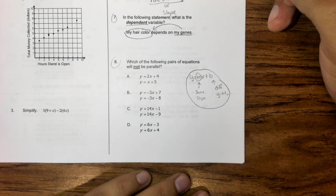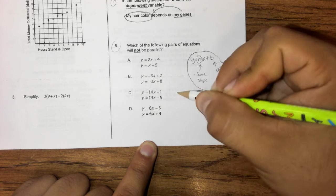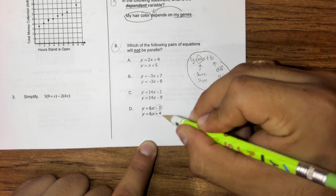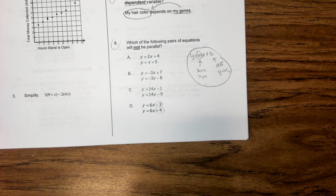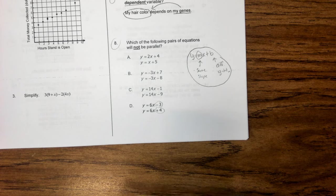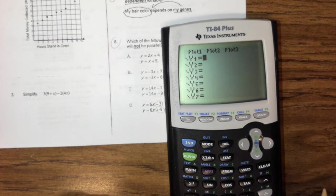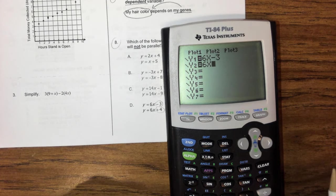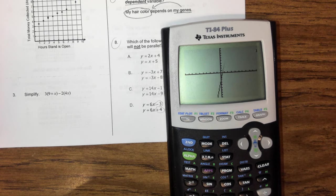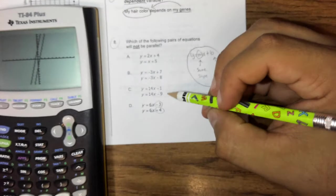So it says which of the following will not be parallel. I'm going to start from the bottom. So we have 6x and 6x. So my steepness is 6. One of them starts at negative 3. One of them starts at positive 4. I guess I can really quickly go ahead and show you guys that these would indeed work. So we can go ahead and go to y equals. We can type in 6x minus 3 and 6x plus 4. And we can go ahead and just see that they are parallel.